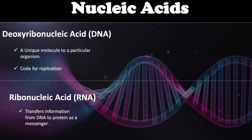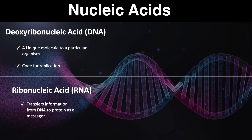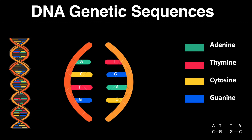Deoxyribonucleic acid, or DNA, is a unique molecule particular to an organism. It contains the code for replication, meaning it can create more of its species. Everybody has their own set of DNA. Ribonucleic acid, or RNA, transfers information from DNA to a protein as a messenger. Regarding the HESI, it is important to know DNA and RNA genetic sequences.